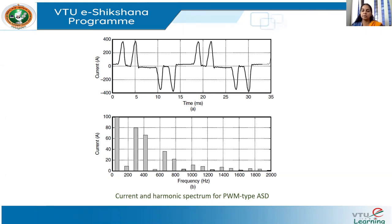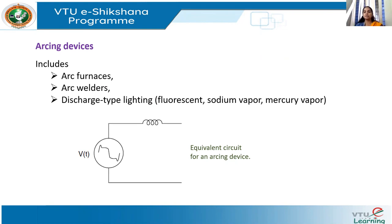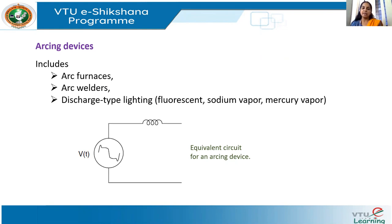When we talk of the three categories of non-linear industrial loads — three-phase converters, arcing devices, and saturable devices — arcing devices include mainly three types: arc furnaces, arc welders, and discharge-type lighting such as fluorescent, sodium vapor, and mercury vapor lighting systems.